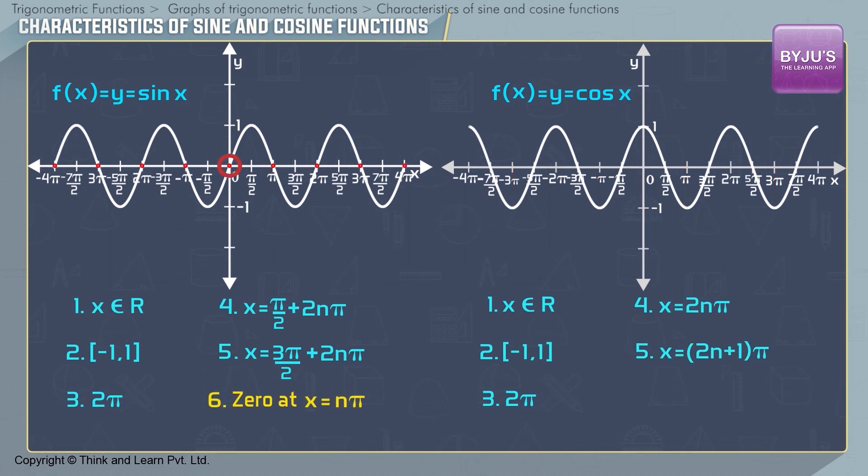Sine x is 0 when x = nπ. Cosine x is 0 when x = (2n+1)π/2.